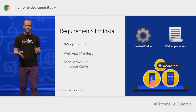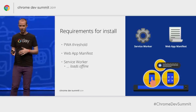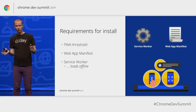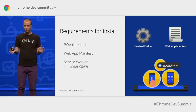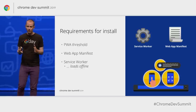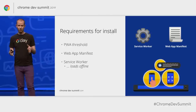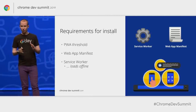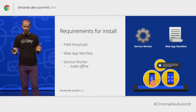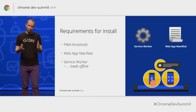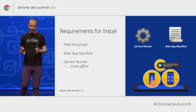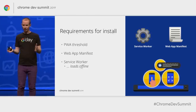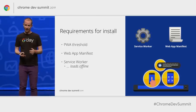I'll mostly be covering the manifest. For the service worker, the key requirement is that you do actually load offline. If a user clicks on your app icon while they're offline and they see nothing or an offline dinosaur, users will have a bad time and the browser will not allow you to install it.